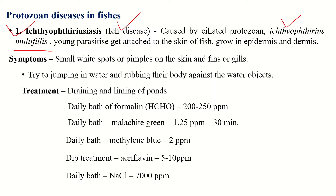They grow between the epidermis and dermis, and after becoming large in size — about 1 mm — they fall to the bottom of the pond. Here they get encysted and then multiply rapidly to produce a large number of offspring.